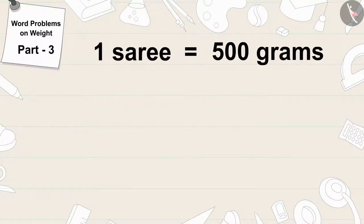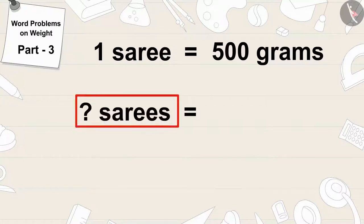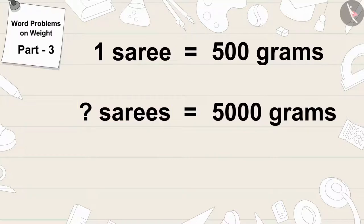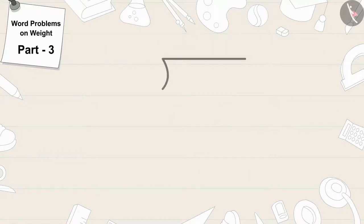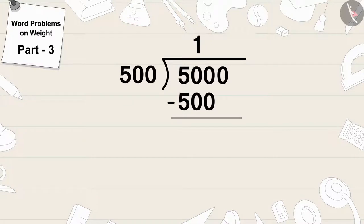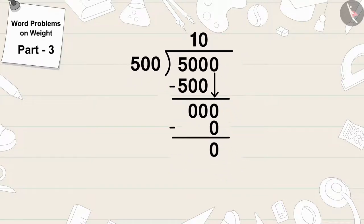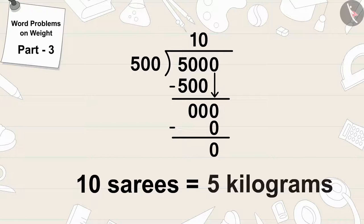Now, Banu has a saree of 500 grams. So to find out how many sarees will be in 5000 grams, we will divide 5000 by 500. 5000 divided by 500 is 10. In this way, Banu will be able to send 10 sarees in a 5 kg parcel.